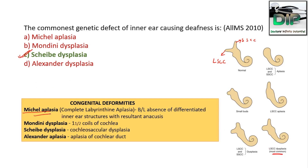Michel aplasia is complete labyrinthine aplasia — complete absence of labyrinthine structure with bilateral absence of differentiated inner ear structure, resulting in anacusis. Mondini dysplasia has one and a half coils of cochlea, whereas normal cochlea has two and a half to two and three-quarter coils — so there are decreased coils of cochlea. Scheibe dysplasia means cochleosaccular dysplasia. Alexander dysplasia is the aplasia of the cochlear duct.